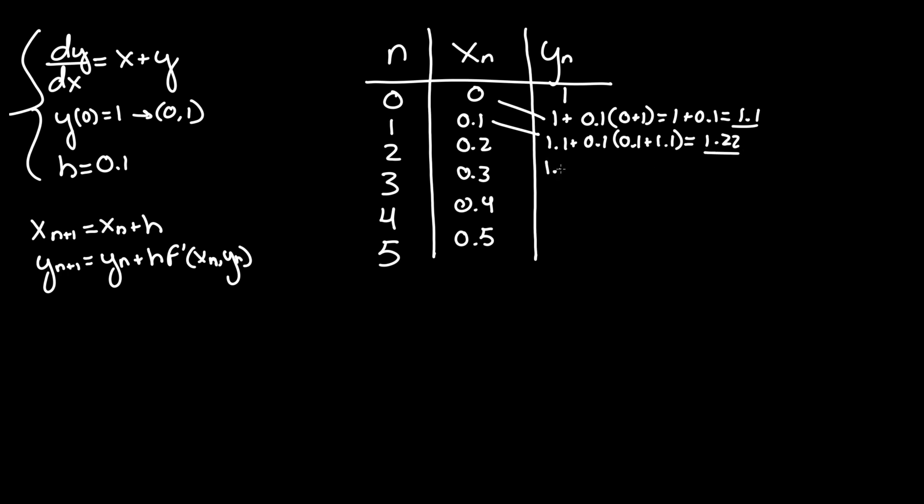Now y_3 = y_2 + 0.1·f'(x_2, y_2). We take x_2 = 0.2 and y_2 = 1.22, so 1.22 + 0.1(0.2 + 1.22) = 1.362.